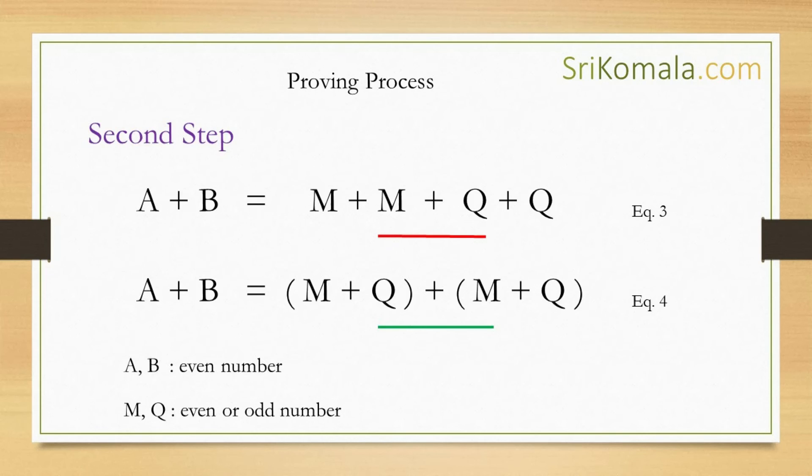Therefore, the rearrangement of terms M plus Q into Q plus M is indeed valid. The fact that M plus Q equals Q plus M, and the fact that both M and Q can be even or odd number, have adequately proved the commutative property in addition.